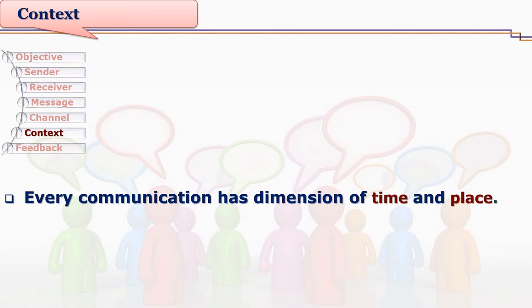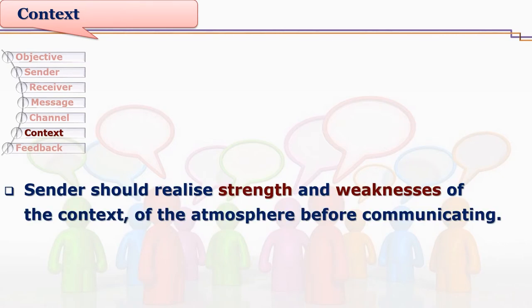We can say this particular communication happened on Facebook, through Hangout, or through WhatsApp. Context is very important, and every sender plays a major role in this. The sender needs to realize the strengths and weaknesses of the context and atmosphere before communicating, because the context itself may create many hindrances and obstacles in communication. A simple example is if there is a lot of noise outside.